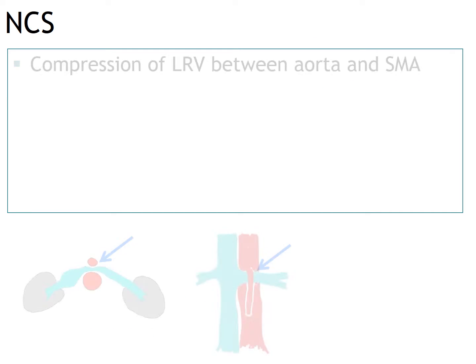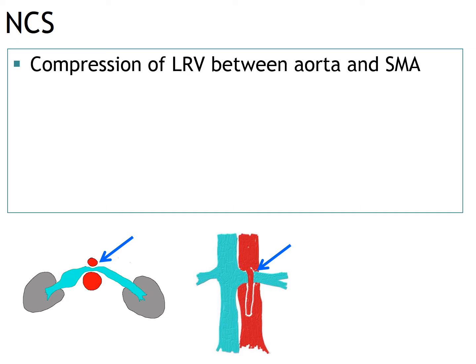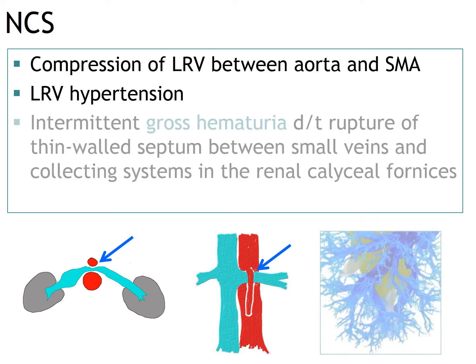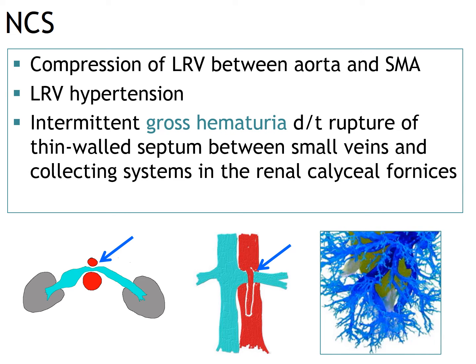Nutcracker syndrome is caused by compression of the left renal vein between the aorta and the superior mesenteric artery, resulting in left renal vein hypertension that causes intermittent gross hematuria due to rupture of thin-walled septa between small veins and collecting systems in the renal calyceal fornices. Sometimes this syndrome may cause microscopic hematuria or proteinuria instead of gross hematuria.